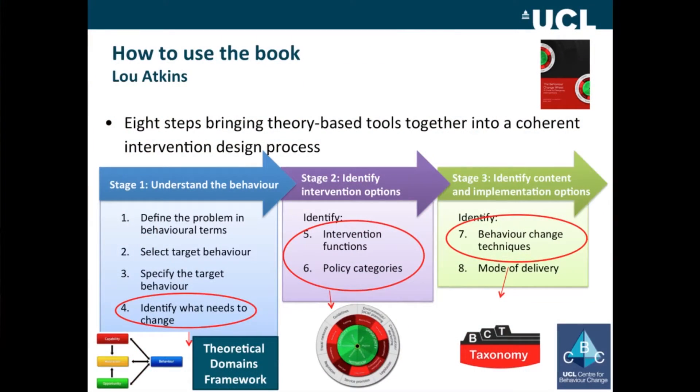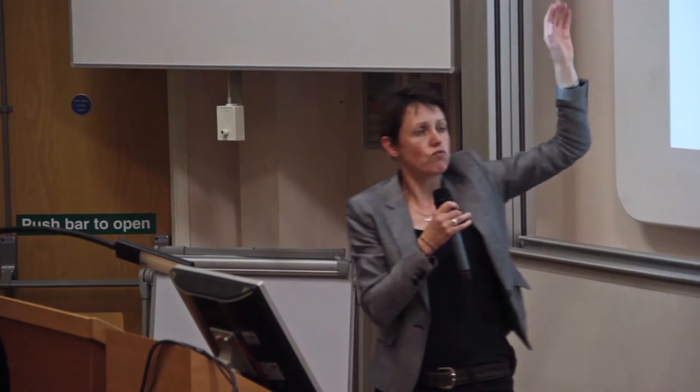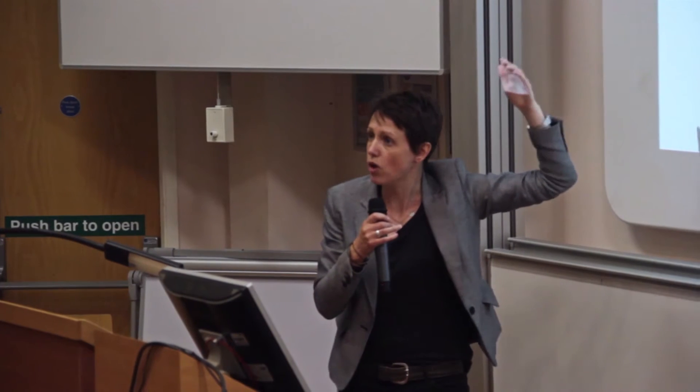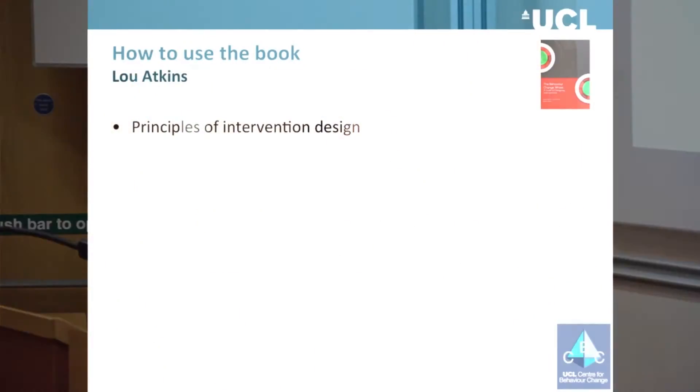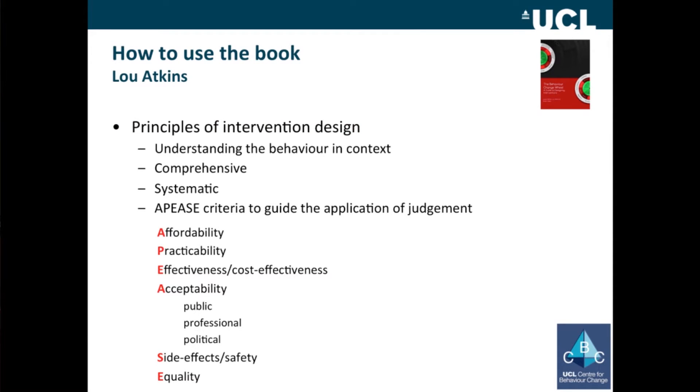models or frameworks. Robert showed you two matrices showing possible relevant intervention functions and policy categories. They are a selection of those functions or categories that might be relevant, so the selection involves an element of judgement, as it does for selecting which behaviour change techniques one might use to deliver the intervention. The book sets out the APPEASE criteria as a framework for guiding the application of judgement.